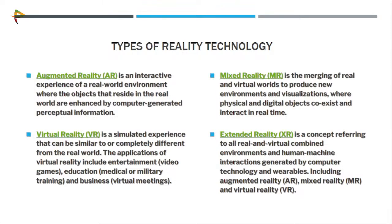The third type is mixed reality. In mixed reality, the real world and virtual world are combined. Any object present in your real world is useful in AR, and the virtual reality part allows you to create digital buttons. For IoT devices, we can create digital images visible in real-time applications. With mixed reality, you can touch virtual buttons or virtual objects present in your mixed reality environment.